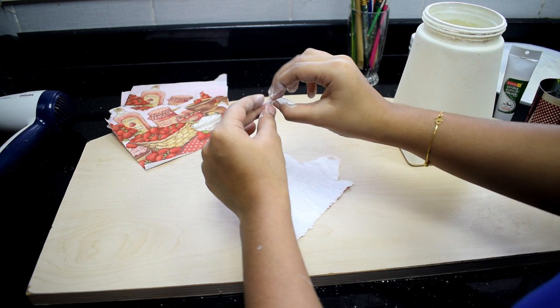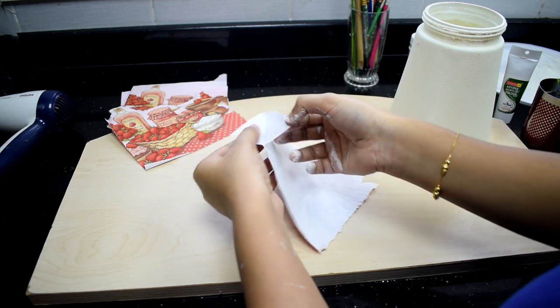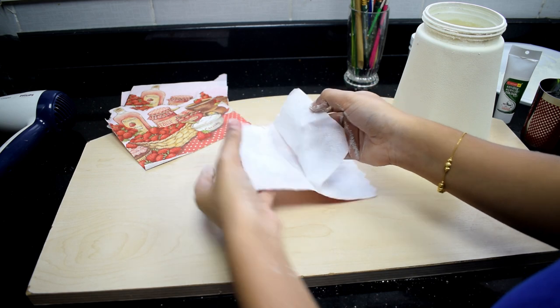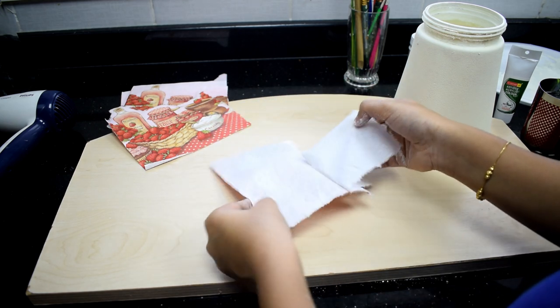We need to use decoupage tissues. Each tissue has two or three different layers. It is very convenient to use on a bottle surface.